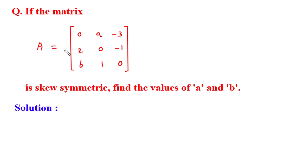If the matrix A is equal to 0, a, minus 3; 2, 0, minus 1; b, 1, 0 is skew symmetric, find the values of a and b. Solution: